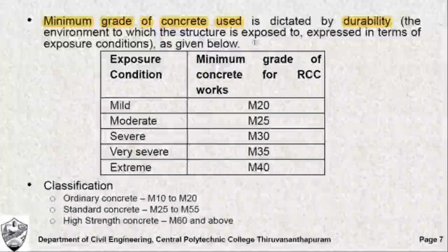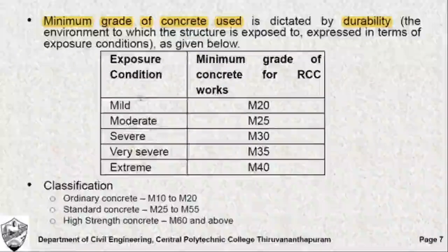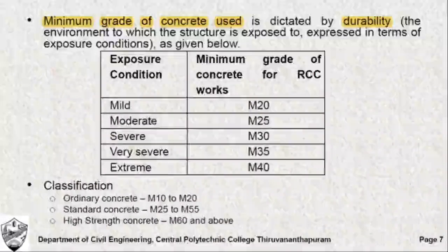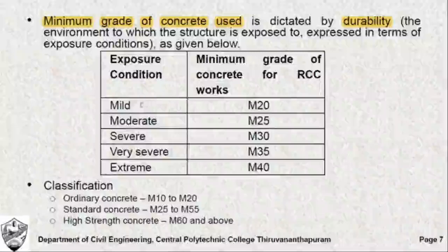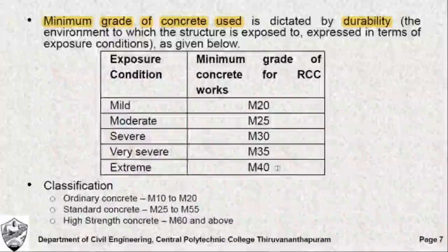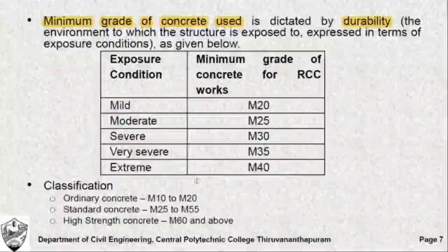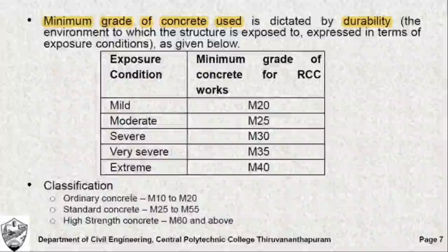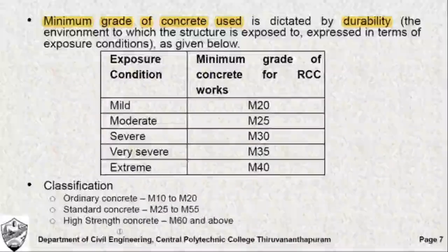Durability is expressed in terms of the environment to which the structure is exposed. The exposure conditions listed are: mild, moderate, severe, very severe, and extreme. The minimum grade of concrete required for RCC constructions corresponding to each exposure condition is also listed, and you can find this in Table 5 of IS 456 on page 20. Grades of concrete are classified as ordinary concrete (M10 to M20), standard concrete (M25 to M55), and high strength concrete (M60 and above).